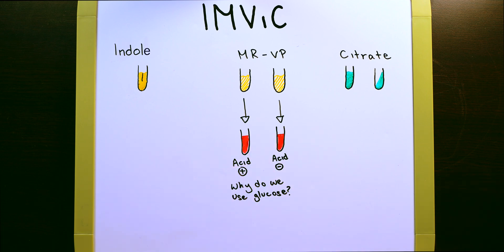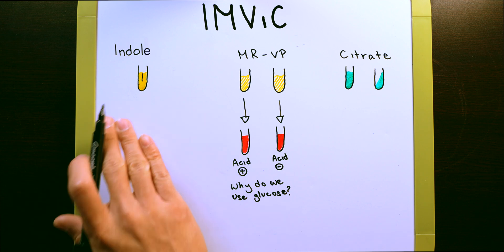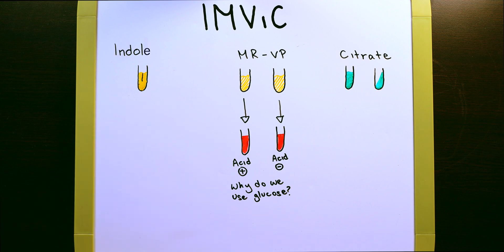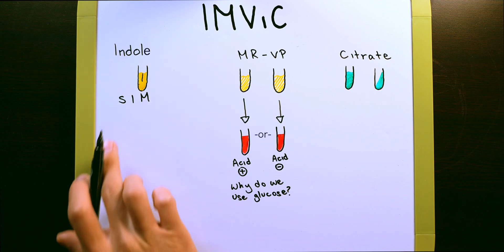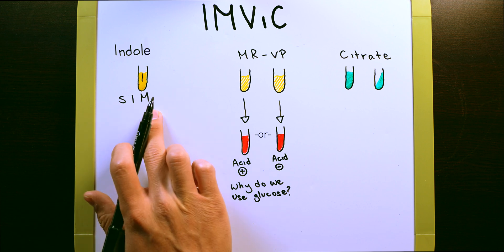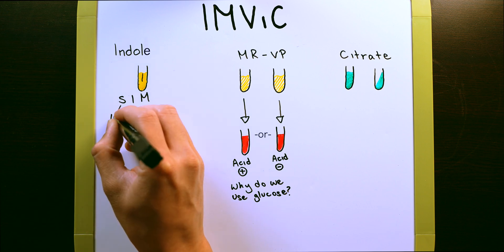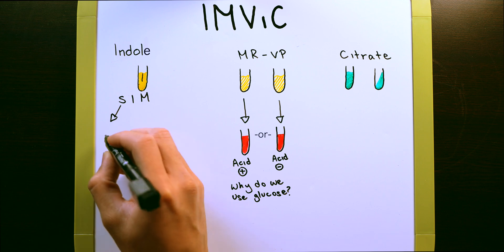As you're waiting for the results of your MR-VP test, you can go ahead and move over to indole. This is going to be the next most time consuming. The indole, what we actually do here is we're using a SIM test. And what SIM stands for is sulfur, indole, and motility. And we're actually going to be able to see all three results in this test tube.